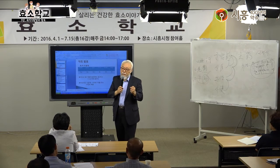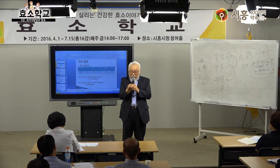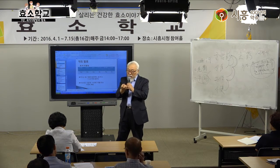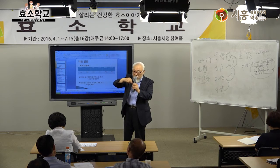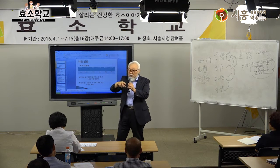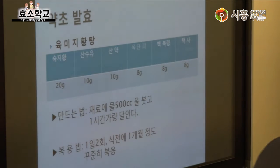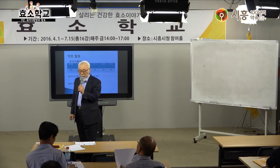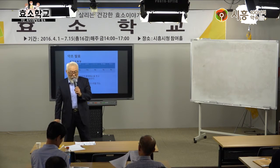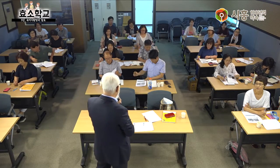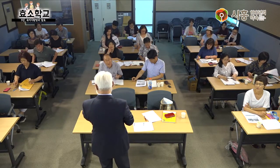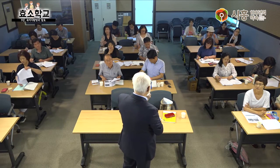발효액은 환자는 1대 3, 일반인은 1대 5, 당뇨 있는 사람은 1대 7, 어린아이는 1대 10으로 희석해서 드세요. 브릭스 13-15 이상 넘기지 않는 것이 좋습니다. 1대 5를 타면 16-17브릭스밖에 안 나옵니다.